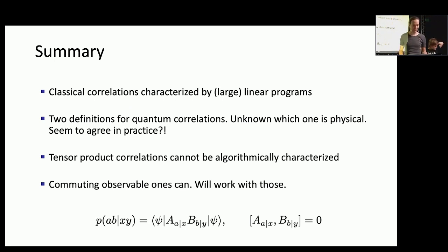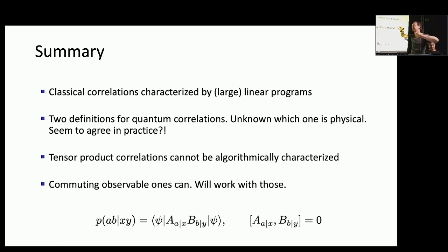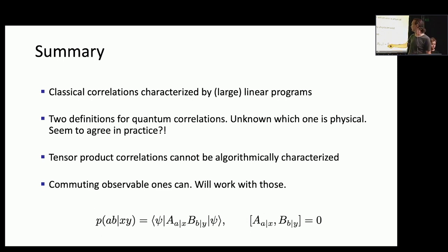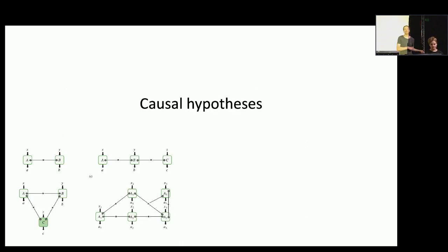Here's the high-level summary: classical correlations can be characterized by linear programs — easy, even if large. There are actually two definitions of quantum correlations, and we don't know which is the right physical one. Tensor product correlations cannot be algorithmically characterized at all. Commuting observable correlations can be characterized via SDP hierarchies, so pragmatically — since we don't know which model is correct and one is tractable — we will work with commuting observables in the remainder of this talk.